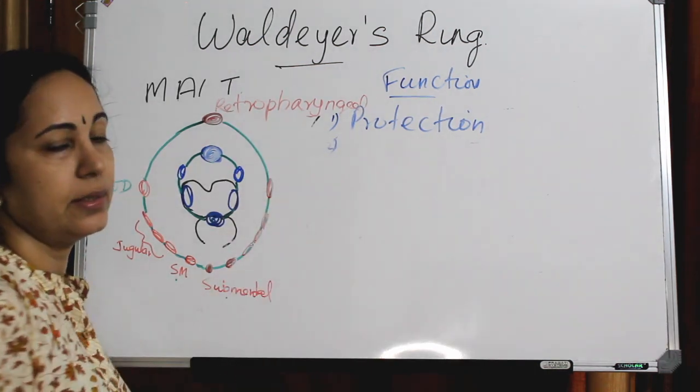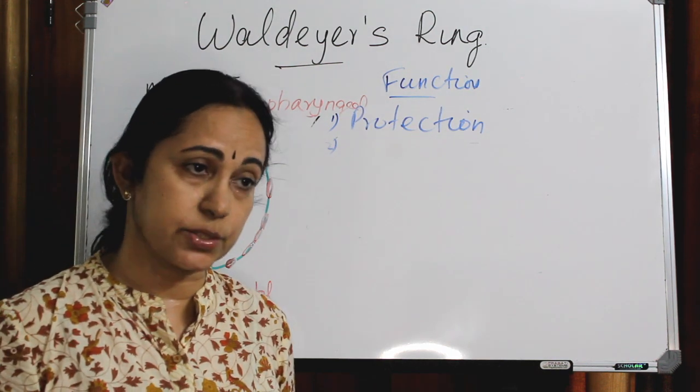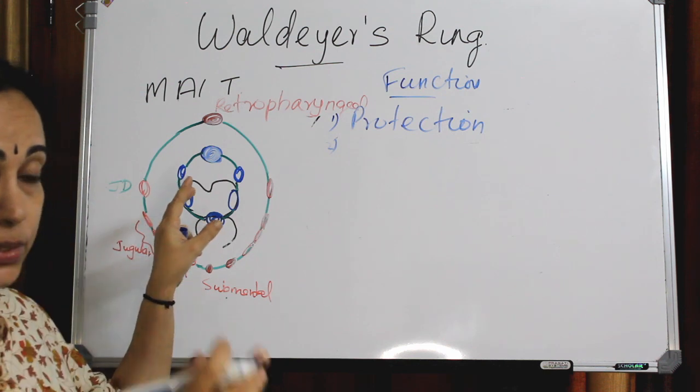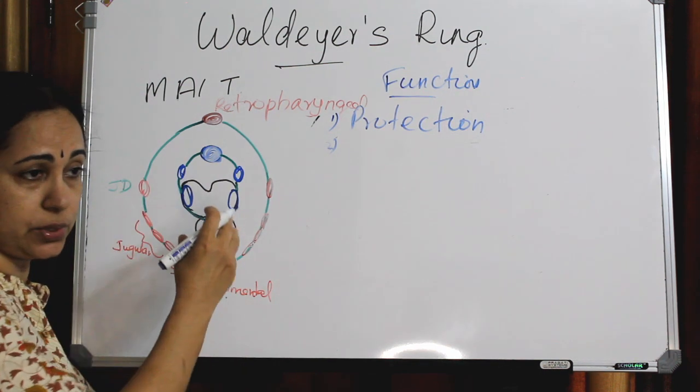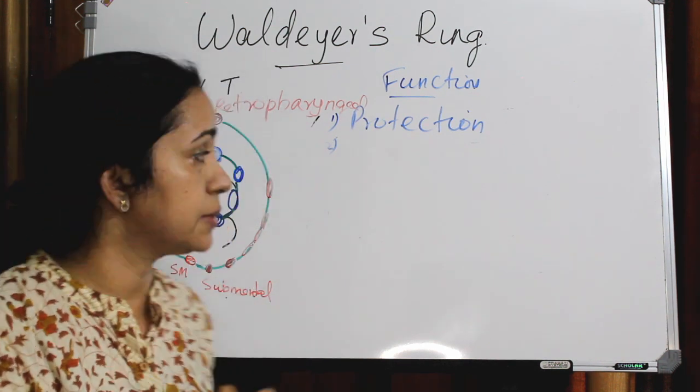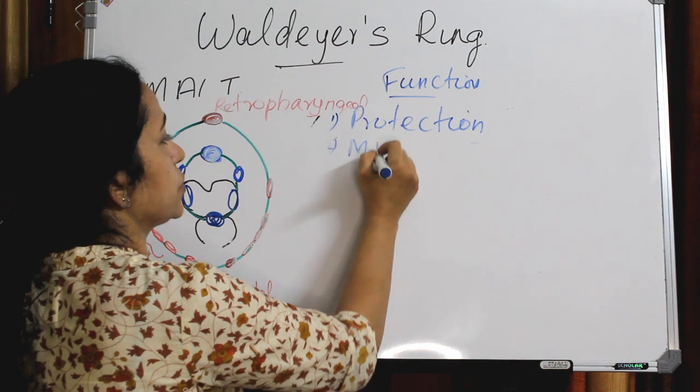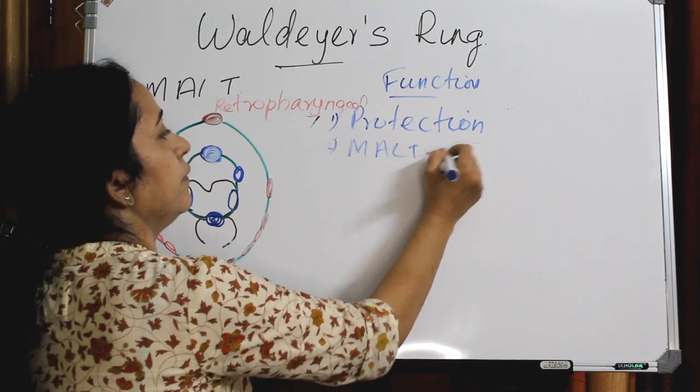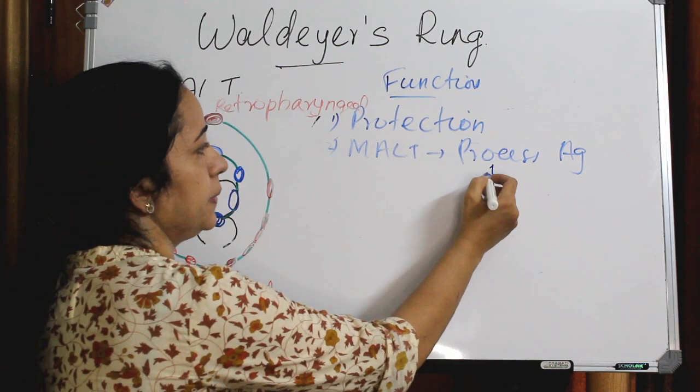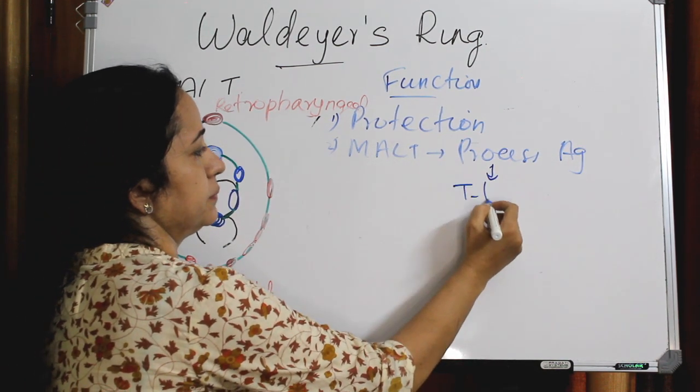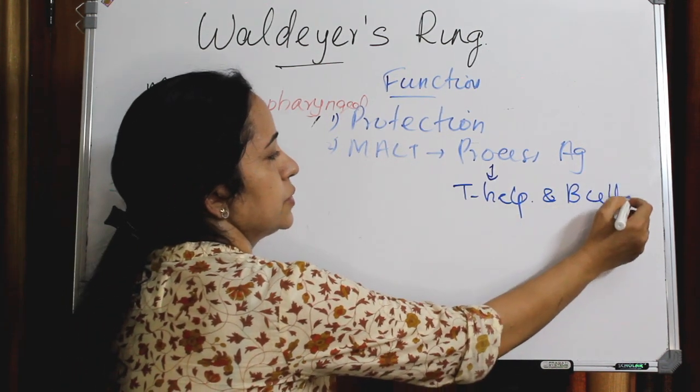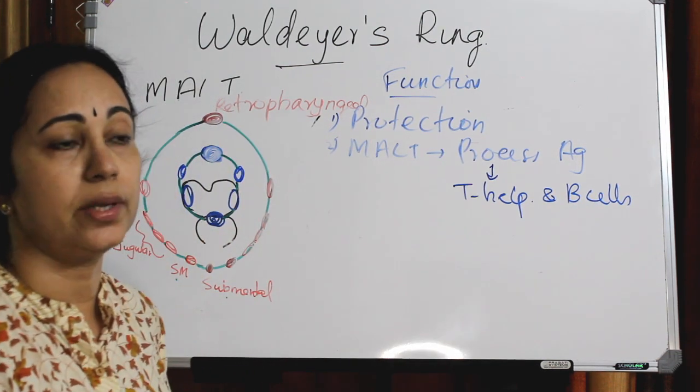The second is that they are constantly exposed to antigenic stimuli. All these antigens or exogenous intruders, aggressors will pass through this. So they are constantly exposed to antigenic stimuli. So they will process, this mucosa-associated lymphoid tissue will process antigen and will present it to T helper cells and B cells. So actually it plays a role in boosting immunity.